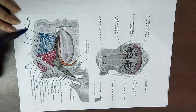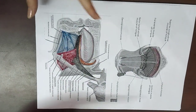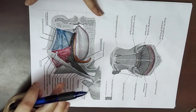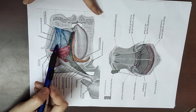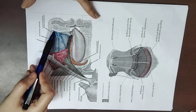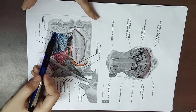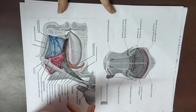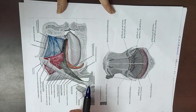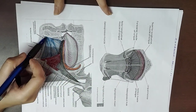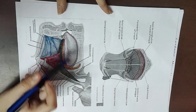The first extrinsic muscle is the genioglossus. The genioglossus is a fan-shaped muscle with three fibers: upper, middle, and lower. They originate from the genial tubercle on the inner surface of the body of the mandible. There are two tubercles — one superior and one inferior — and the fibers originate from the superior (upper) tubercle.